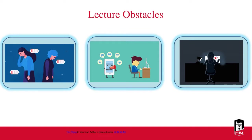We also have to contend with distractions. In an online environment, this can be even more magnified — there could be household background noises or the temptation to multitask. If you're online, you might have another tab or browser open, trying to do more than one thing at once. Students are experiencing the same thing. Regardless of setting, the human mind does begin to wander. We see this when speakers begin to ramble and when students begin to zone out and miss pertinent information.